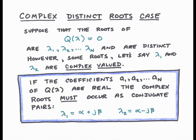The coefficients of our characteristic polynomial Q of lambda will be real valued. These coefficients come from the differential equation. And if the coefficients a1 through n are real valued, then we know that the roots of the characteristic polynomial must occur in complex conjugate pairs. That is, if one root is given as lambda 1 equals alpha plus j beta, where j is the square root of minus 1, then there must be another root given as alpha minus j beta.